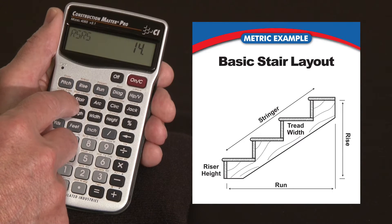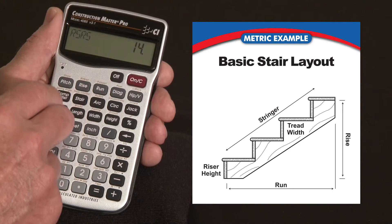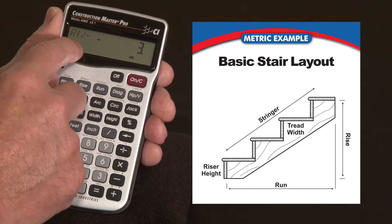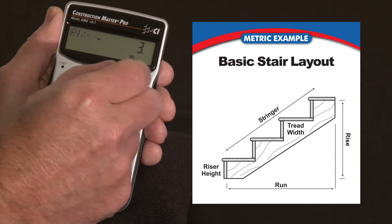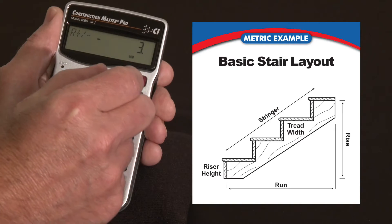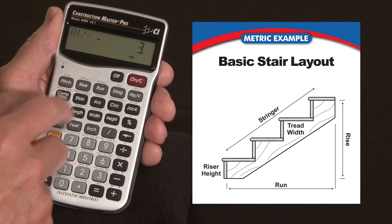Press the stair key again. It tells us that there's 14 risers. Press it again. It says the R stands for remainder, and there's a minus 3mm. So somewhere there's a shortage that we're going to have to make up either in the first riser or the last one, or spread it across a couple of them.